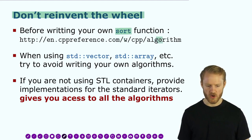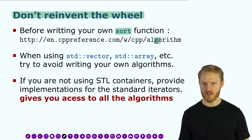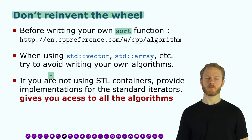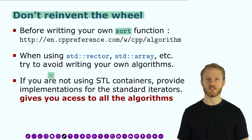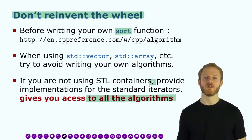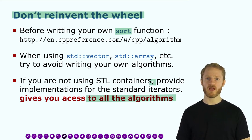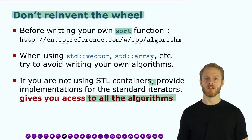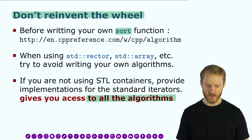Don't reinvent the wheel. If you want a sort function, check if it's already in the algorithms. When creating your own data type, if you implement the standard iterators, you get access to all algorithms in the standard library. Instead of writing your own sort, find, and other functions, it's better to implement iterators for your data type and then work with the standard algorithms.